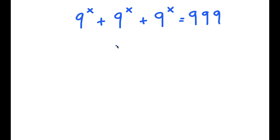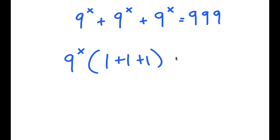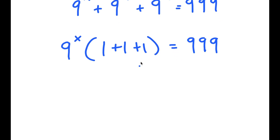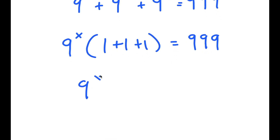To solve this, I'm going to first start by factoring out 9 to the power of x on my left hand side. So I get 9 to the power of x times 1 plus 1 plus 1 is equal to 999. Now 1 plus 1 plus 1 is 3, so I get 9 to the power of x times 3 is equal to 999.